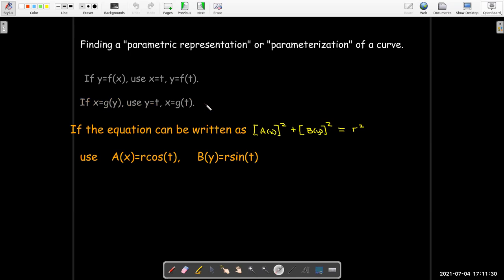And then we just saw that if we have this x squared plus y squared, or something squared plus something squared equals r squared, essentially we're going to use polar coordinates here. We're going to let a of x equal r cosine of t, b of y equal r sine of t.